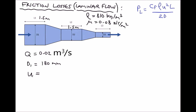We need to do the volume flow rate divided by the cross-sectional area of the pipe. So we have 0.02 divided by pi r squared. If our diameter is 180 millimeters, our radius is 90 millimeters, which is the same as 0.09 meters. Therefore the velocity of the fluid in the first section of the pipe equals 0.786 meters per second, accurate to three decimal places.